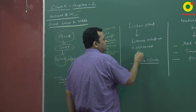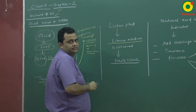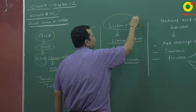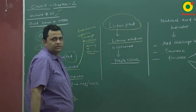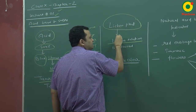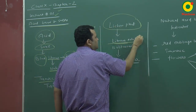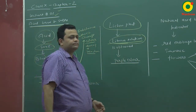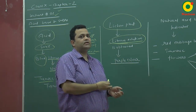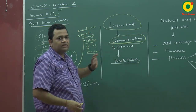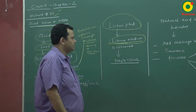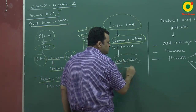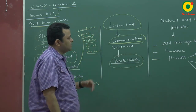Litmus paper is made from litmus solution, and the litmus solution is prepared from a plant called the lichen plant. The extract of the lichen plant is dissolved in a solution called lichen solution, and we coat it on paper — that paper is called litmus paper. In neutral condition, this solution is purple in color.